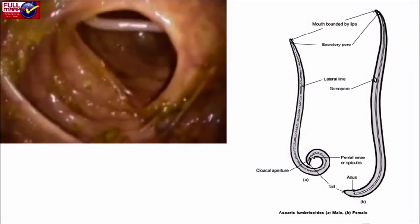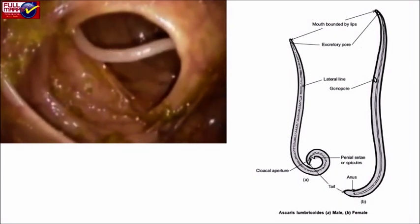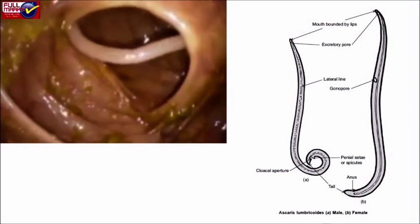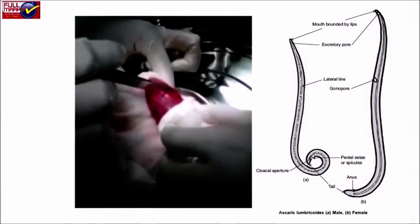Amphids, gustatory helps in feeding. Possesses well-marked sexual dimorphism. Tail is curved ventrally in male while straight in female. Male is smaller than female.